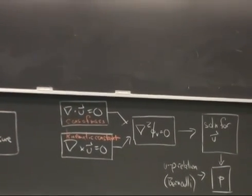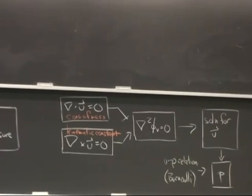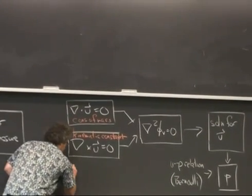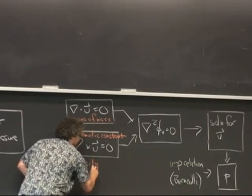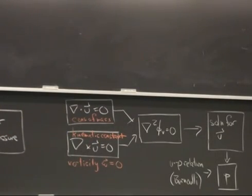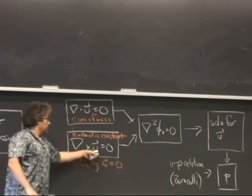This kinematic constraint is that the curl of the velocity is equal to zero, or equivalently, that the vorticity omega is equal to zero. If we define the vorticity omega as the curl of this velocity.